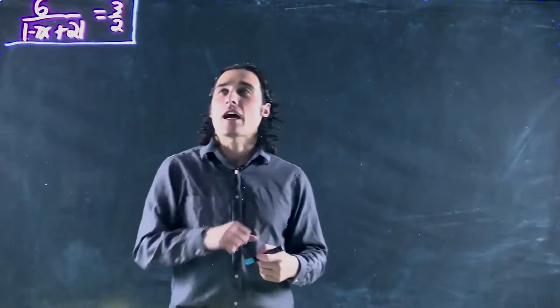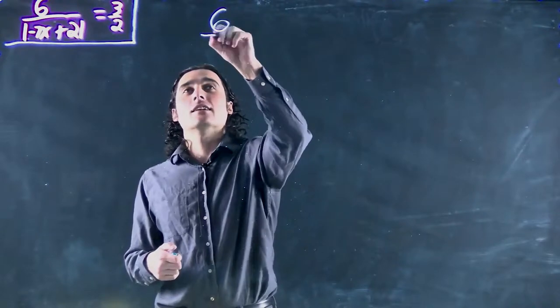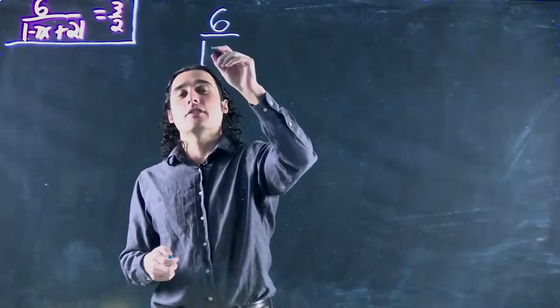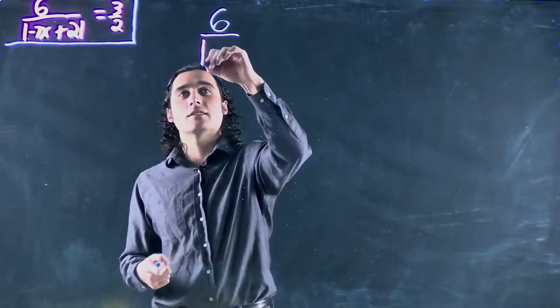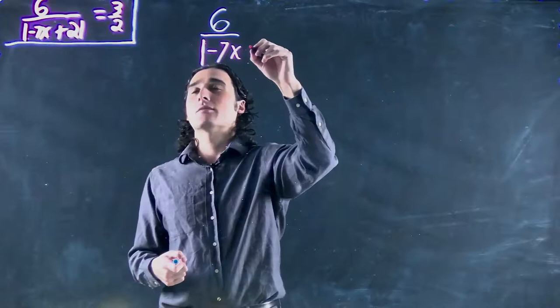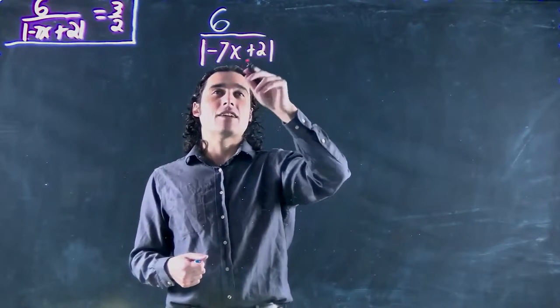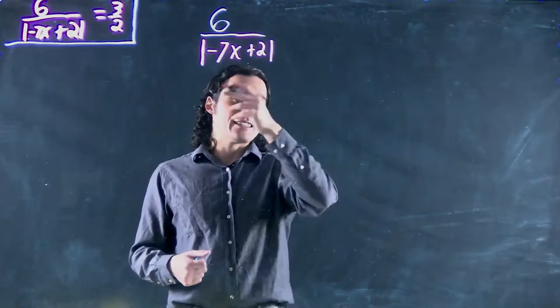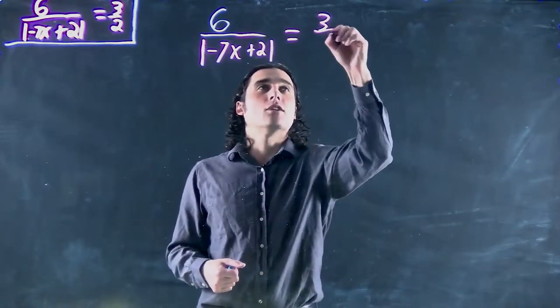Hello again. Another absolute value case. And we have in this case 6 divided by the absolute value of minus 7x plus 2. So the absolute value of minus 7x plus 2 is dividing 6, and that whole thing is equal to 3 over 2.